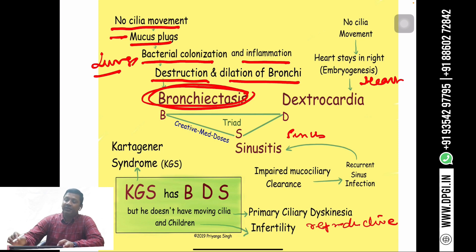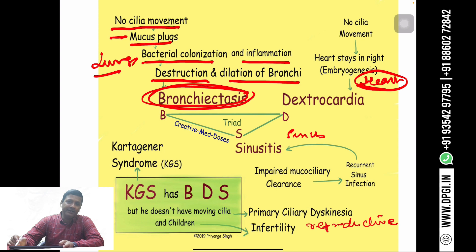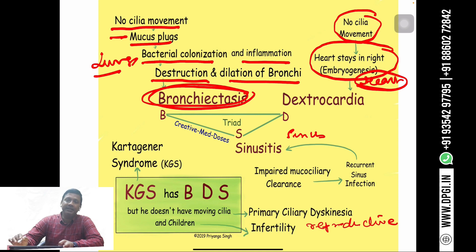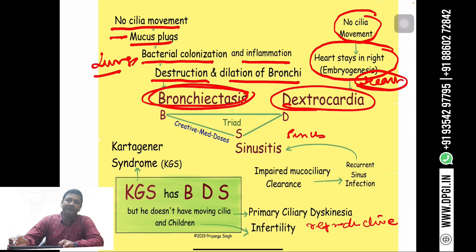If the heart is involved, during embryogenesis the heart normally moves to the left side. But in Kartagener syndrome, since the cilia are immobile, there is no ciliary movement, and the heart stays on the right side — it does not move to the left side. This leads to dextrocardia, which is another feature of Kartagener syndrome.